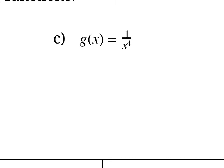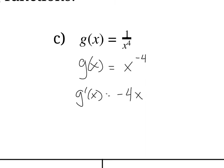This next one doesn't look like the others — we have x to the power of 4 in the denominator. The key is we can represent that as x to the power of negative 4 in the numerator. Following the same power rule, we bring down that negative 4 in front, so g prime of x is negative 4x to the power of negative 5. Writing with positive exponents, that's negative 4 over x to the 5.